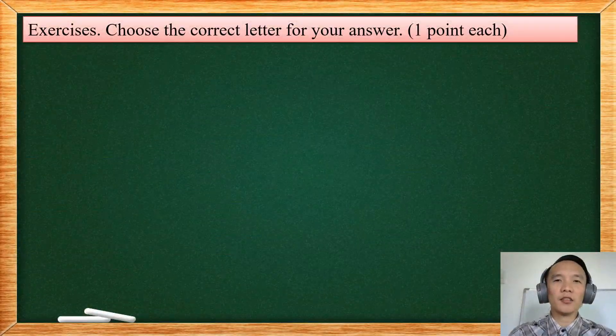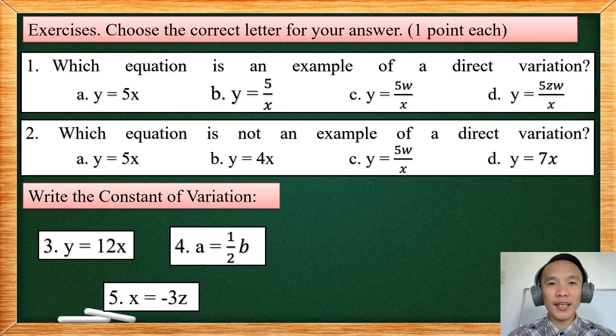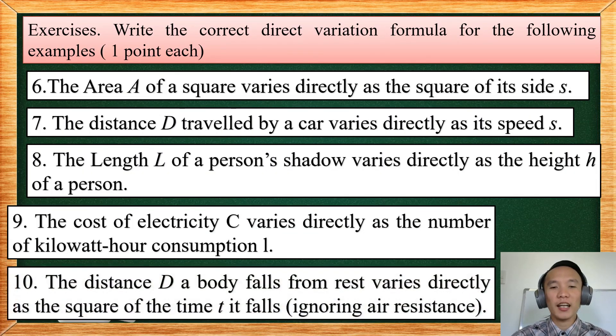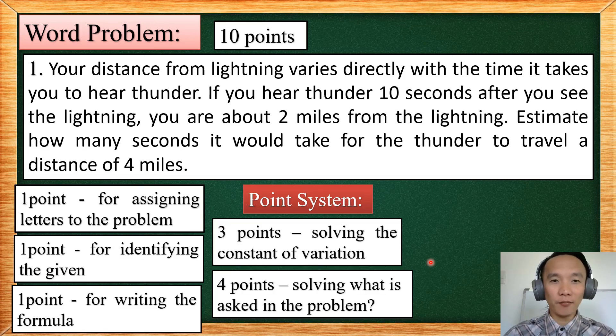Now, since we already know how to solve a direct variation problem, here are some of the exercises for you to practice. So you can write your answer in any sheet of paper. Now for the number 6 up to 10, you are going to write the formula for the direct variation. So here we have a word problem, and it is equivalent to 10 points. And the point system will be as follow. One point for assigning the correct letters to the problem. Another point for identifying what are the given. And another point for writing the correct formula. Then 3 points for solving the constant of variation. And 4 points for solving what is asked in the problem.